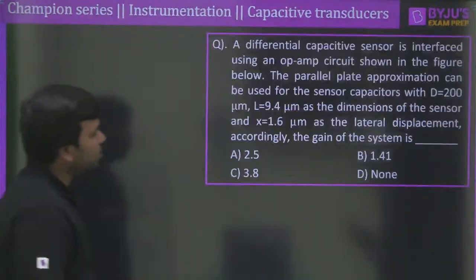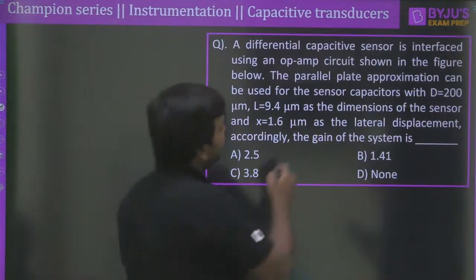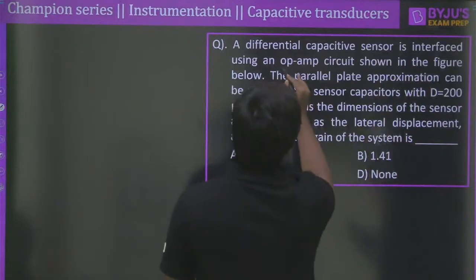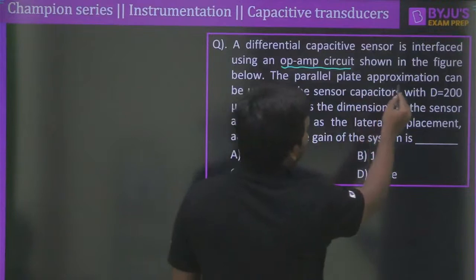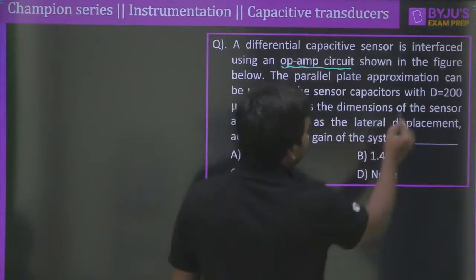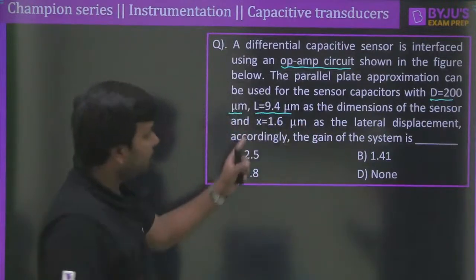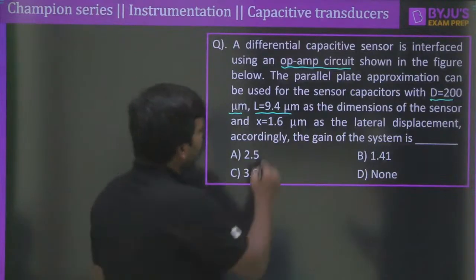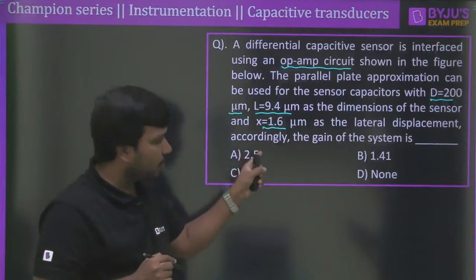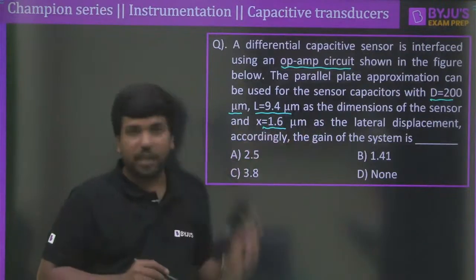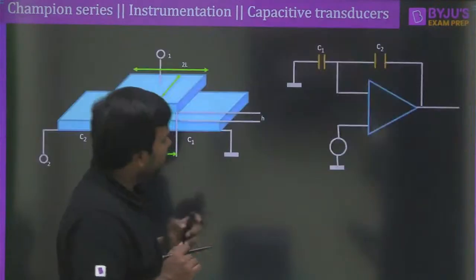Moving to the next question: a differential capacitive sensor is interfaced using an op-amp circuit shown in the figure. Using the parallel-plate approximation with D = 200 μm, L = 9.54 μm, and lateral displacement X = 1.6 μm as shown in the figure — what would be the gain of the system?